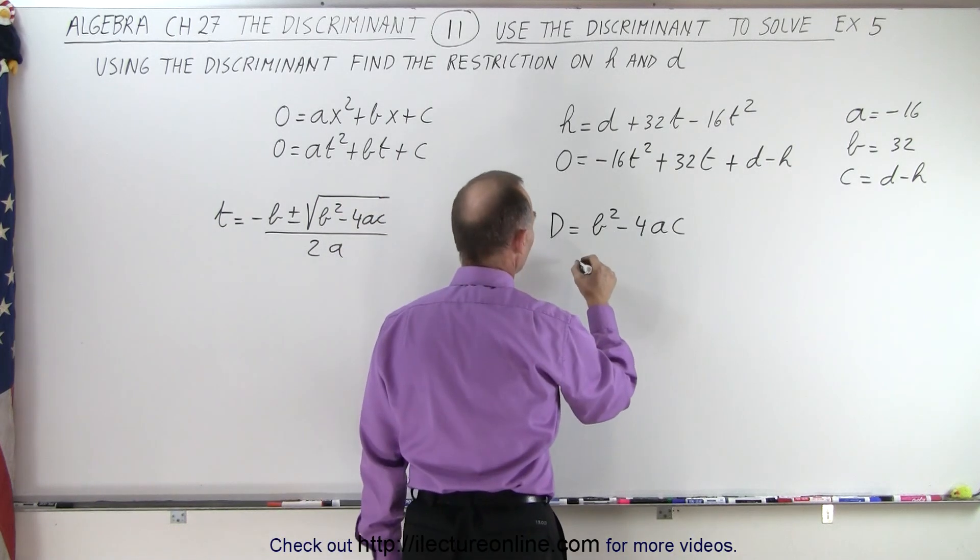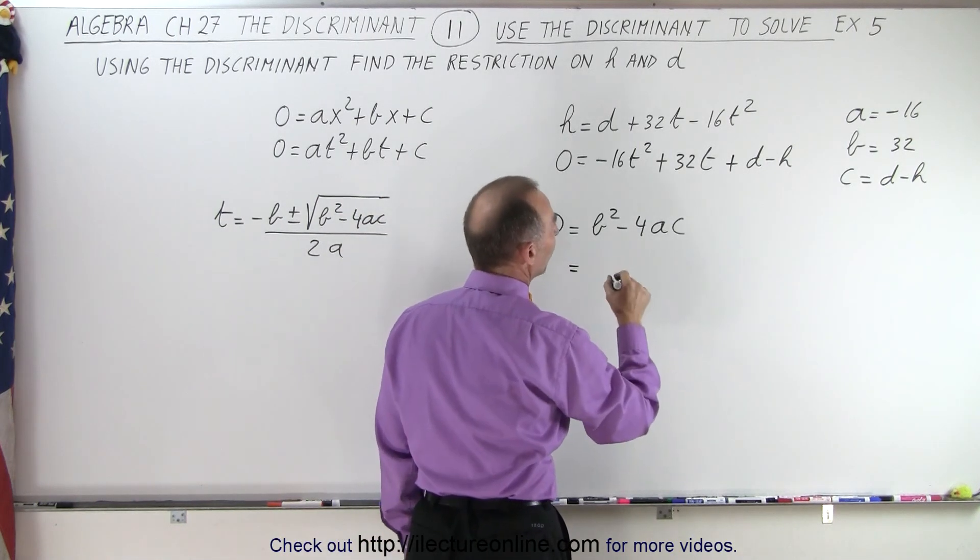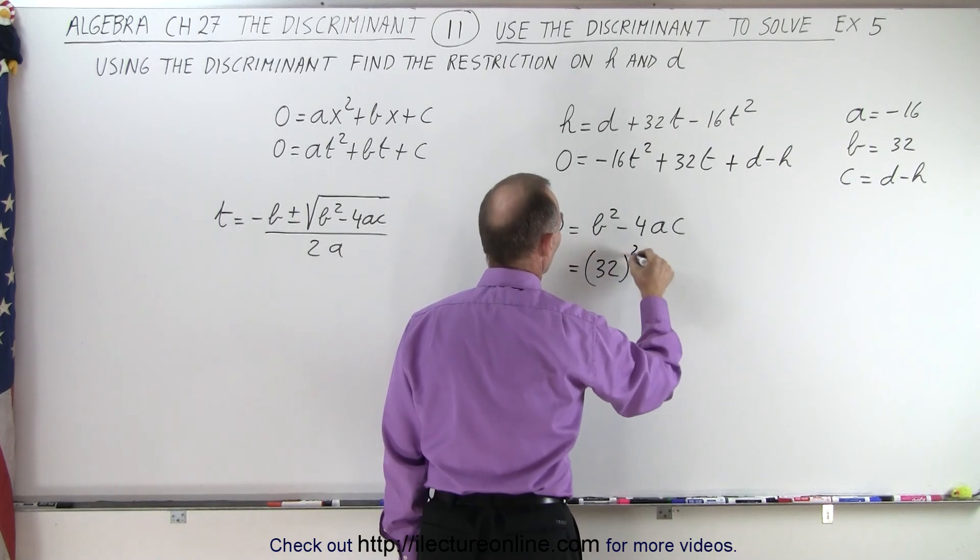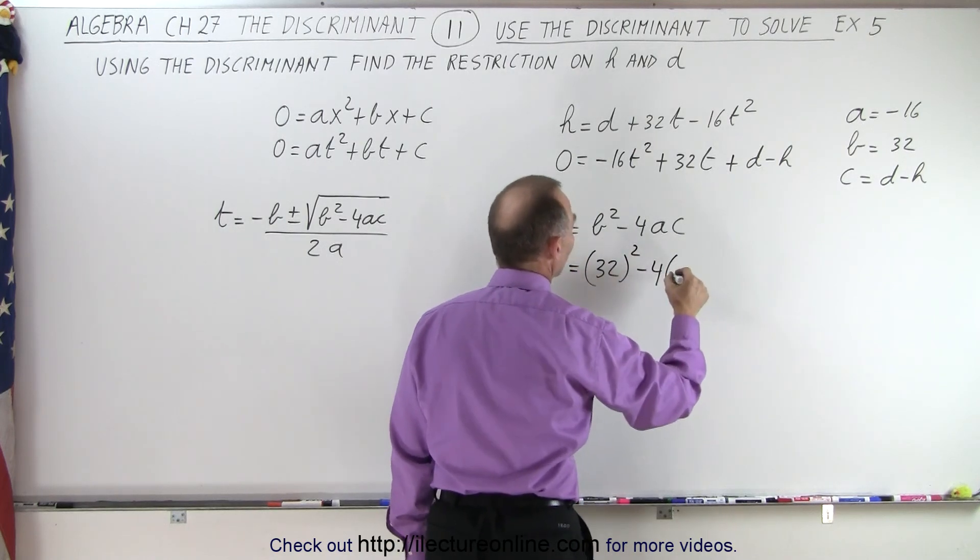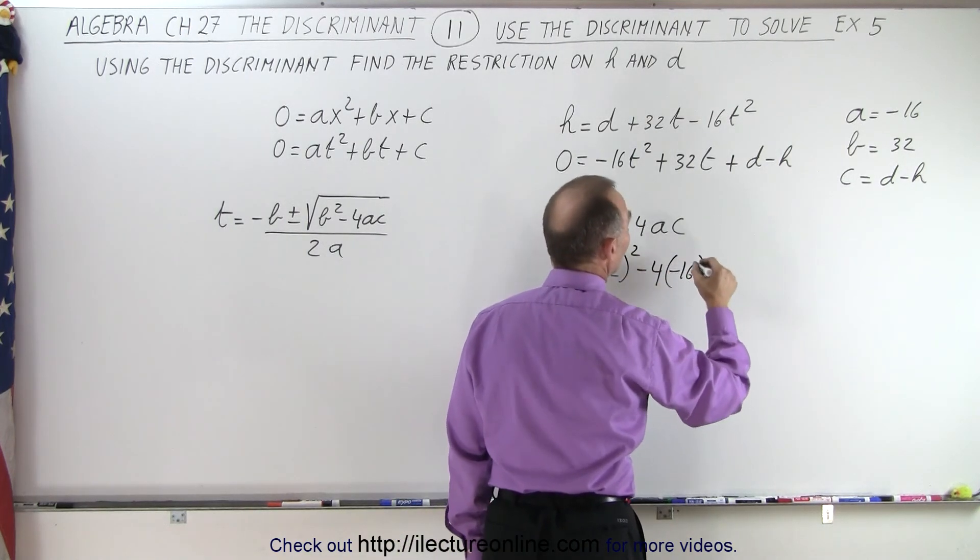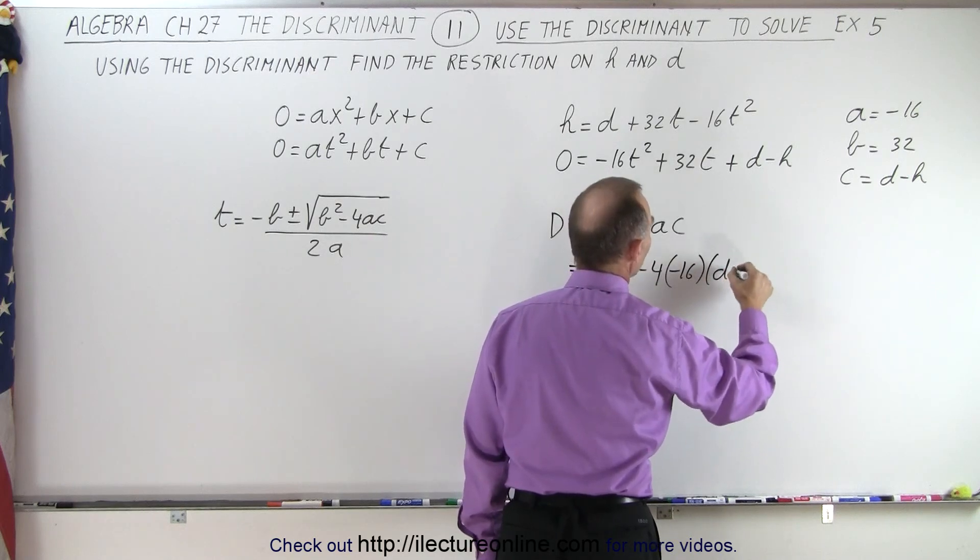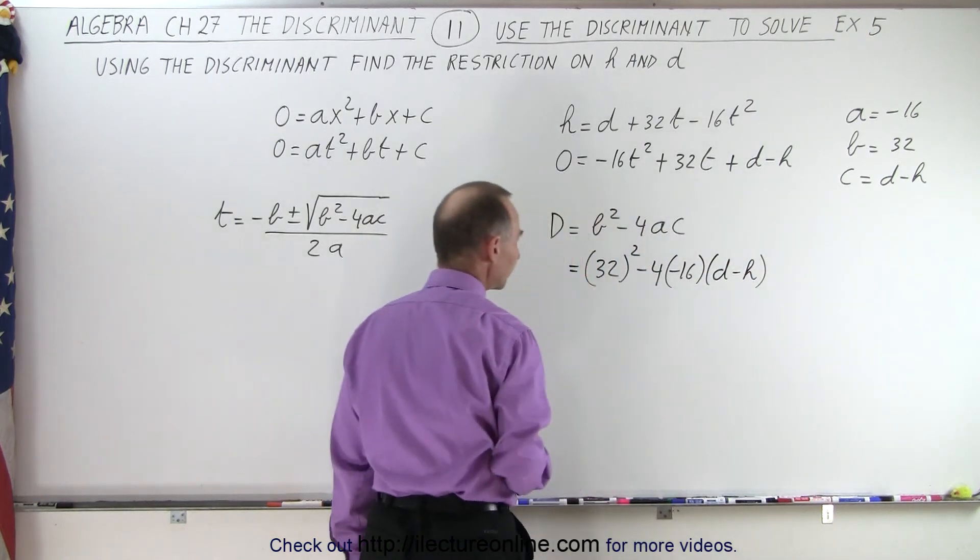Let's figure out what that's equal to. This is equal to b squared, that would be 32 quantity squared minus 4, times a, which is minus 16, times c, which is d minus h.